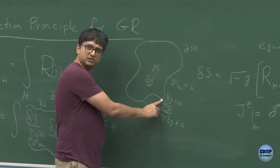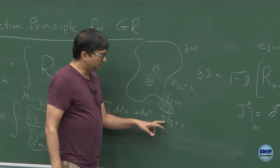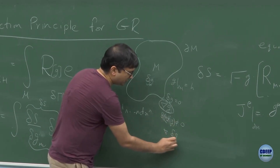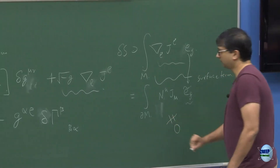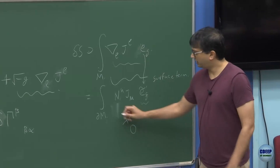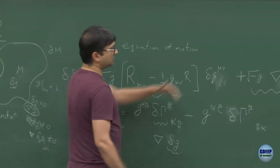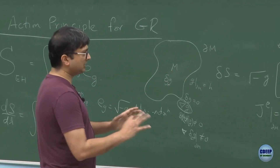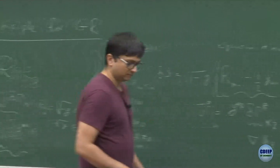Since we have not fixed the derivative of G on the boundary — only G itself — the derivative of delta G is not zero on the boundary. This means we cannot set the boundary term to zero as we would normally do. Therefore the equation of motion is not just G_{mu nu} = 0; there is also this boundary term that has to be taken into account. Last time we hand-waved and ignored this term, but today I will give the prescription to ensure that term goes away.